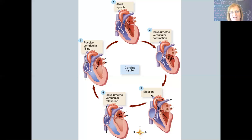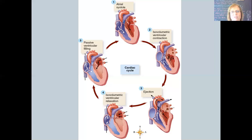In atrial systole, we have that strong contraction of the right and left atria — one right after the other. What that gives you is atrial kick. When you have a good strong contraction of the atria, up to 30% of your cardiac output is related to that atrial kick. In particular, when we talk about atrial fibrillation — where the atria are fibrillating rather than contracting strongly — that's where you'll see issues with cardiac output. That good strong atrial contraction pushes blood into the ventricles.